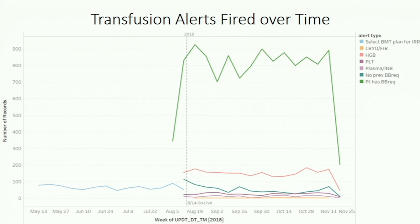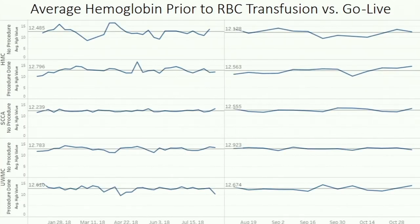One platelet alert fires for every approximately ten platelets transfused. One INR alert fires for about ten to fifteen plasma transfusions. We're curious as to whether or not we really changed ordering practices. So we loop back to the average hemoglobins — average hemoglobins per period of time where people transfused RBCs. We didn't really see any appreciable differences in terms of what hemoglobin people tend to transfuse at, at the different institutions with or without procedures performed during an encounter. High hemoglobin values might be skewing this high. In the future, I would probably look at these in terms of acuity of admission, or stratify these based upon service.